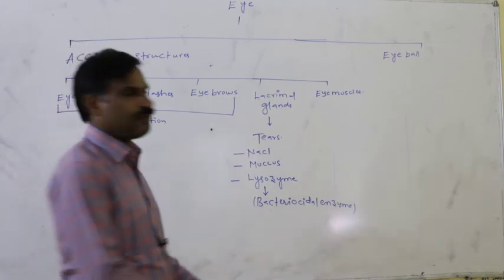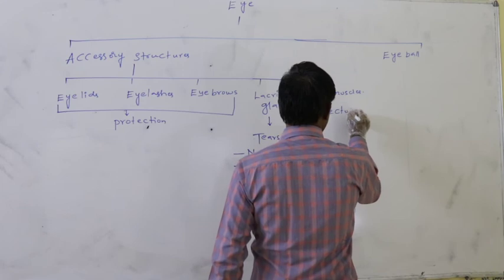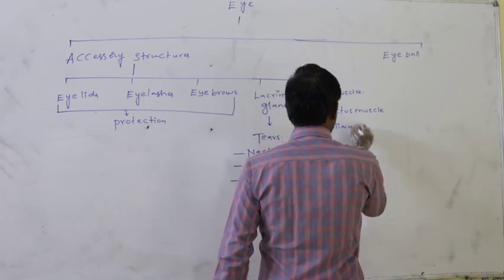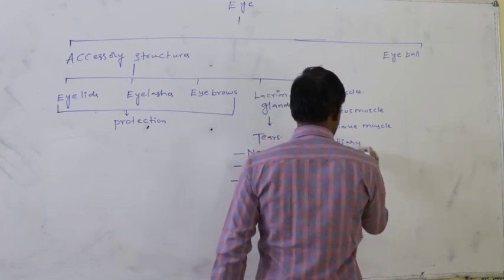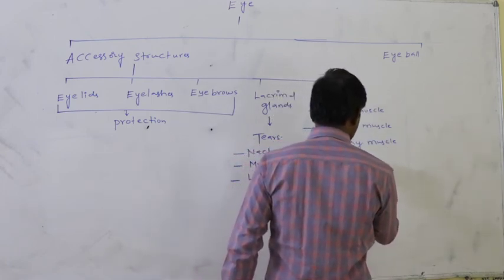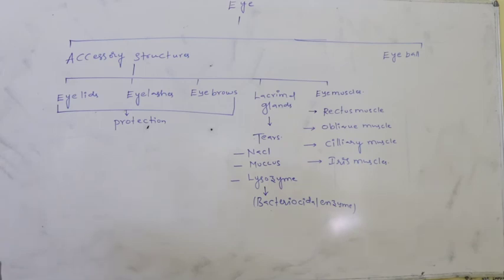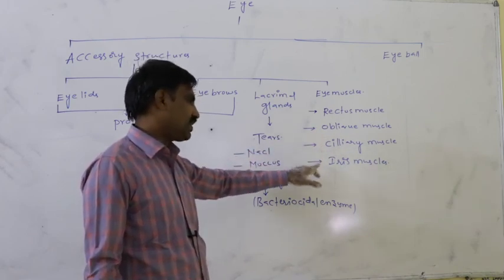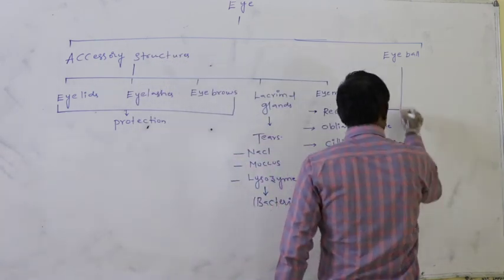Eye muscles present in association with the eye include rectus muscle, oblique muscle, ciliary muscle, and iris muscle. Rectus muscles are of four types: superior rectus, inferior rectus, lateral rectus, and medial rectus. Oblique muscles are of two types: superior oblique and inferior oblique.